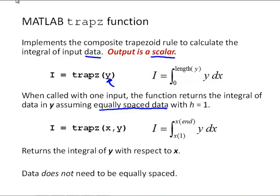So that's like an integral from 0 to the length of y of y dx. If you call TRAPZ with two inputs, x and y, it will integrate the data in y with respect to the data in x, going from x1 to xn in whatever increment the data x has. And that data does not need to be equally spaced.